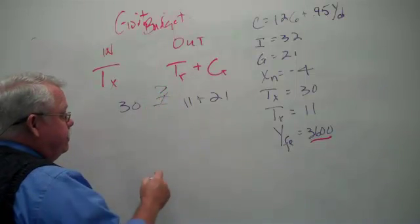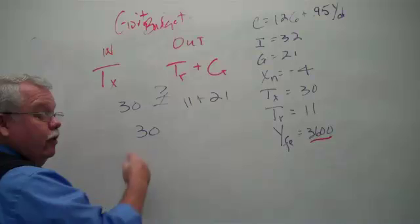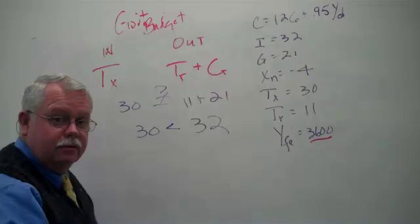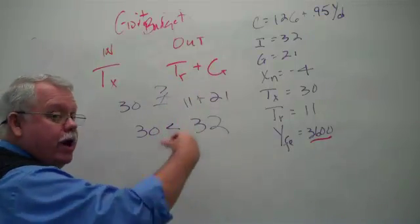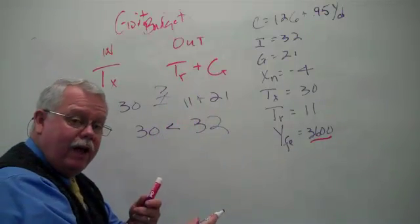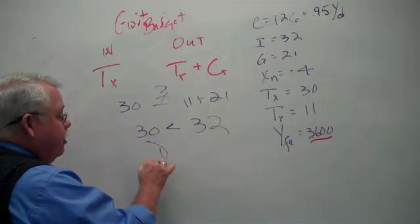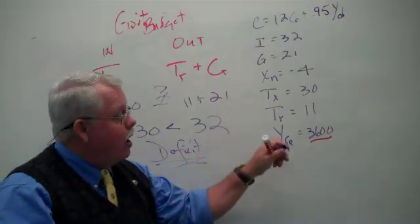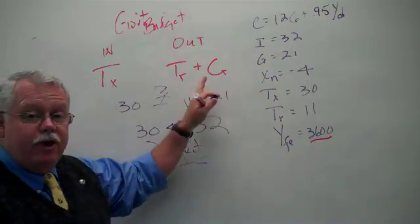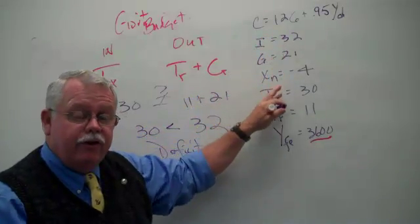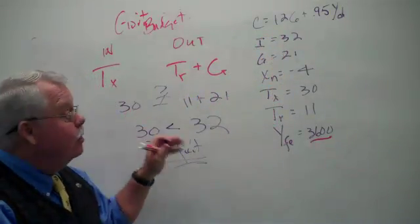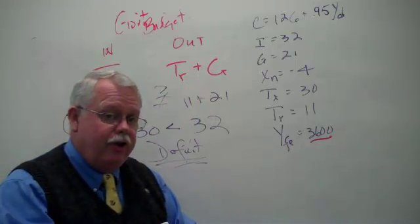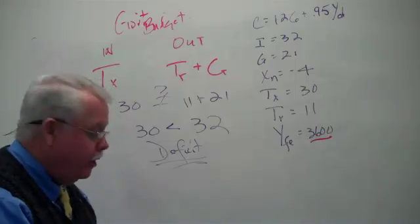So, what's going on here? Clearly, they're not equal. In fact, you have less money coming in than you have going out. And when you're putting more money out than it's coming in, what do we call that for you or me or the government? We call it a deficit. And so, I want you to be able to look at the model given the numbers and figure out is the government running a deficit or the other case would be a surplus where they have more coming in than going out.